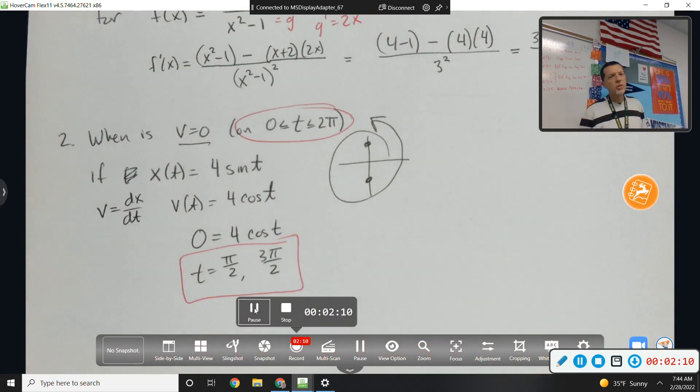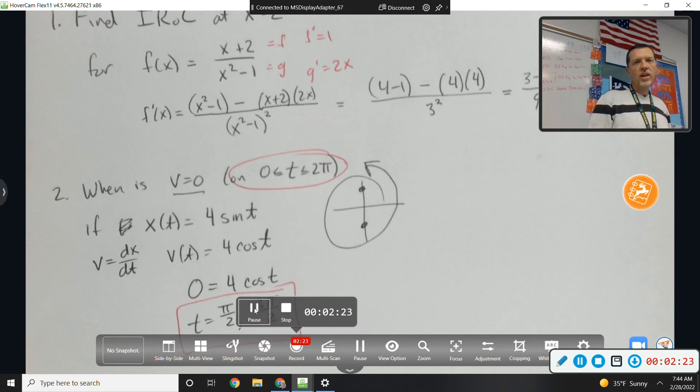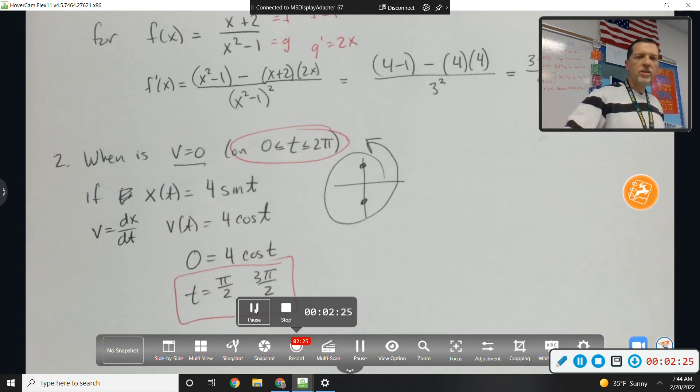So number two was just a couple of easy review things. Velocity is derivative of position. Derivative of sine is cosine. And then a little bit of pre-cal thrown in there. Again, those are test-inspired, so some of the ideas from the test, the review part of the test, covered right there.